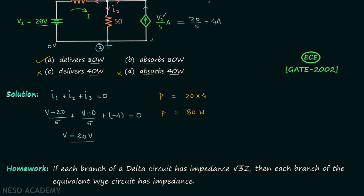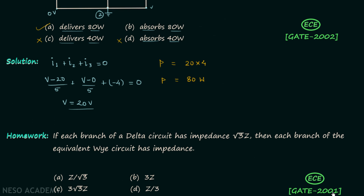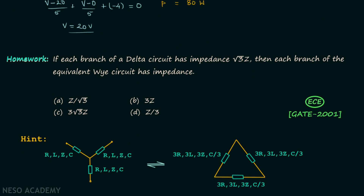Now we move on to the homework problem, taken from the GATE 2001 EC paper. You need to find the impedance in the equivalent Y circuit when the delta circuit has impedance root 3 times Z. Before applying the delta-to-Y conversion formula, here is an important point: when all three elements in a Y network have the same value, the equivalent delta network elements will have values three times larger.